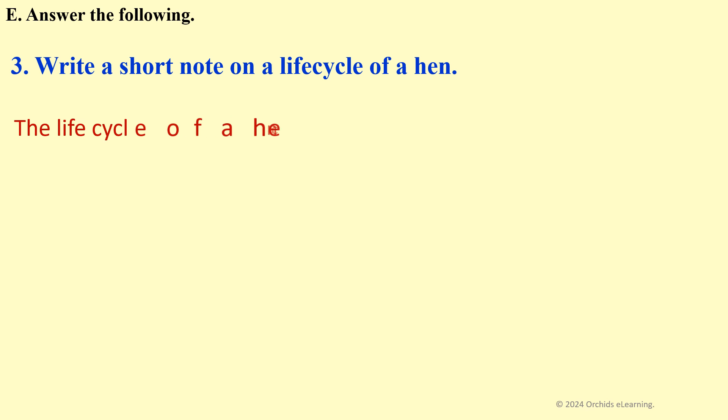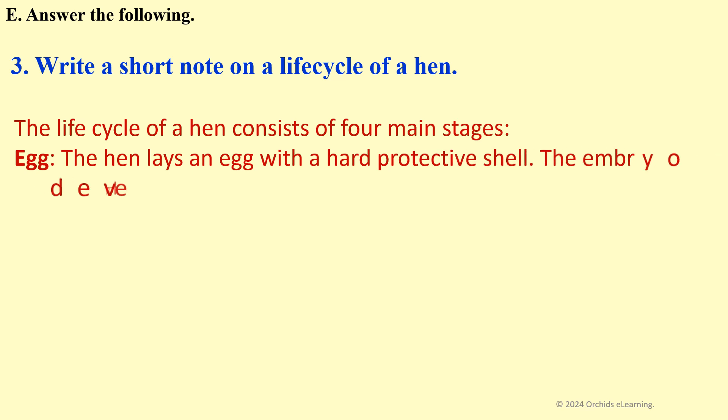Write a short note on the life cycle of a hen. The life cycle of a hen consists of four main stages. Egg: The hen lays an egg with a hard protective shell. The embryo develops inside the egg. Hatching: